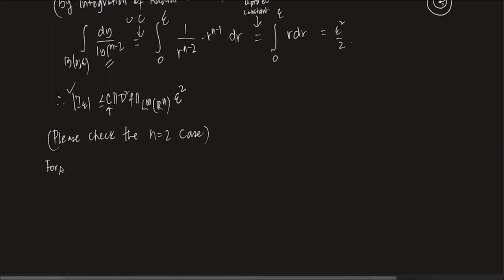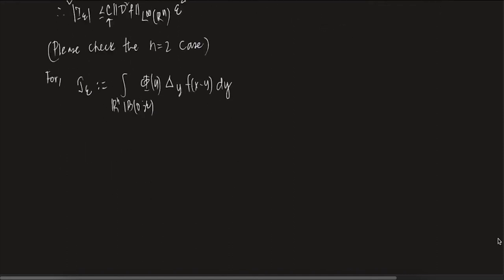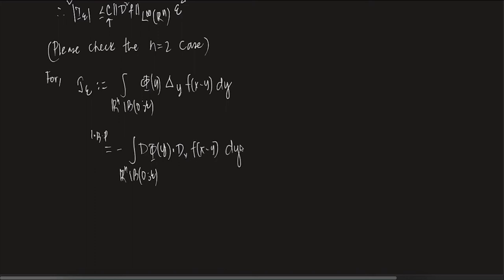Now let us do the Jε part. Jε = ∫_{ℝⁿ∖B(0,ε)} φ(y) Δₓf(x − y) dy. By integration by parts, this equals −∫_{ℝⁿ∖B(0,ε)} ∇φ(y) · ∇f(x − y) dy plus boundary terms.